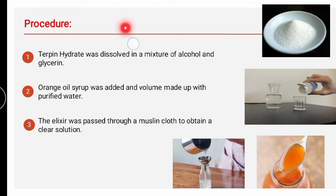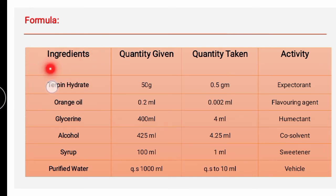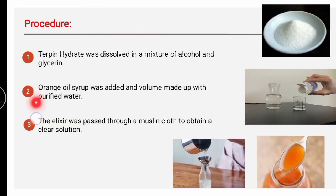The procedure: terpene hydrate is first weighed in the required quantity and then dissolved in the mixture of alcohol and glycerin. Orange oil and syrup are then added and the volume is made up with purified water. The preparation is passed through muslin cloth to obtain a clear solution. In summary, the active is dissolved in the solvent, the flavorant and colorant are added, the volume is made up, and then it is filtered through muslin cloth for the final fill.